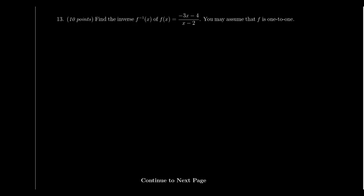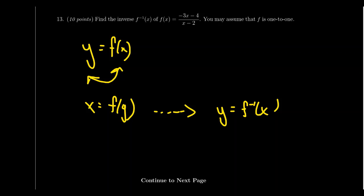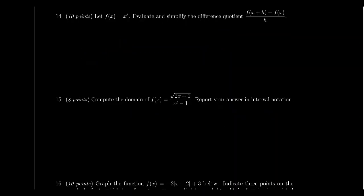Question 13 is more typical of free response. You'll be given a function — in this case, f(x) = (−3x − 4) / (x − 2) — and asked to compute f inverse of x algebraically. Set y = f(x), swap x and y to get x = f(y), then solve algebraically until you have y = f inverse of x. Show all work — partial credit is available, but the final answer alone earns little or no credit. Inverse functions were covered in Lectures 7 and 8, Section 1.6.